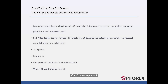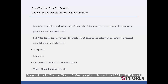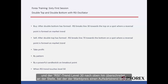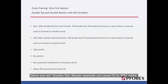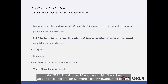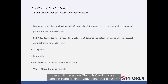Buy and Sell. When a double bottom pattern forms under level 30 in RSI and then the RSI trend crosses level 30 towards the top on a spot where market price starts an uptrend, maybe by a bullish candle, a trader can place a buy order. When a double top pattern forms above level 70 in RSI and then RSI trend crosses level 70 towards the bottom on a spot where market price starts a downtrend, maybe by a bearish candle, then a trader can place a sell order.